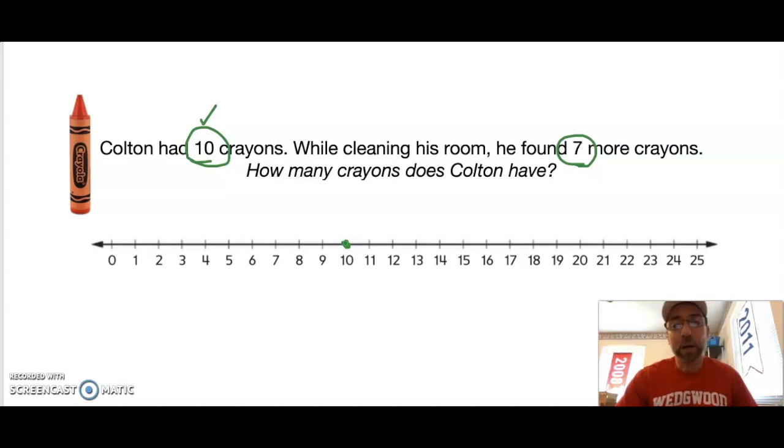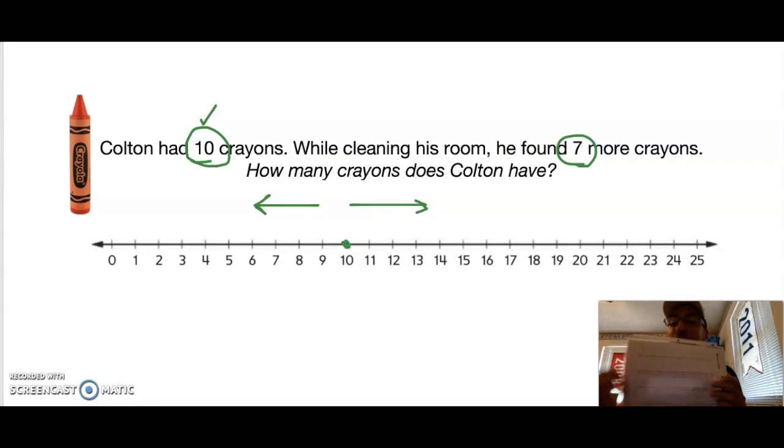Now I have to decide which way am I going to hop on my number line. Is my answer going to get bigger or is my answer going to get smaller? Well, Colton started with 10 and he found 7 more. How many crayons does Colton have? I want you to press the pause button on this video and try to solve this problem right on your sheet protector. Make the hops and find the final answer. Oh, and remember mathematicians always put a number model. When you're done, hit play because we're going to see if you got the correct answer.